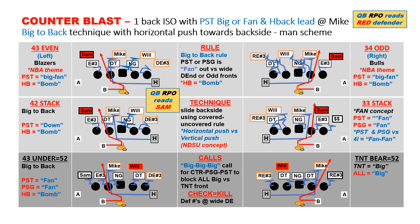A variation to inside gap is counter blast. We still use our big-to-back rule, but now the H-back is the puller doing the bomb block on the mic. We use an NBA-themed blast — Blazers to the left and Bulls to the right. Again, the exception is the bottom right versus the bear.